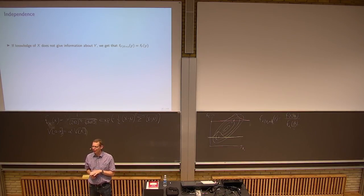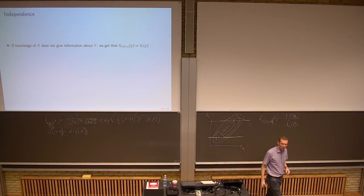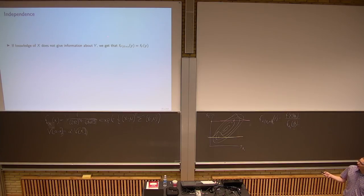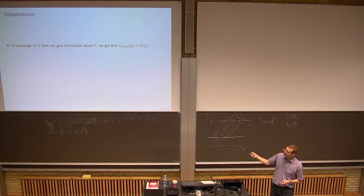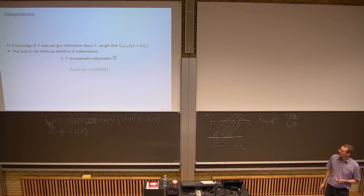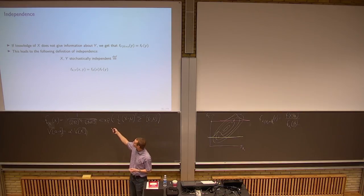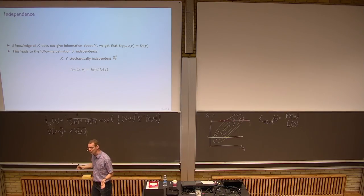Independence is something you've probably heard about before. If knowledge about X does not give any information about Y, that means the conditional distribution of Y given X is just the marginal distribution of Y. If that holds both ways — X does not depend on Y and Y does not depend on X — then the joint density is just a product of the marginal densities. That's the definition of independence.